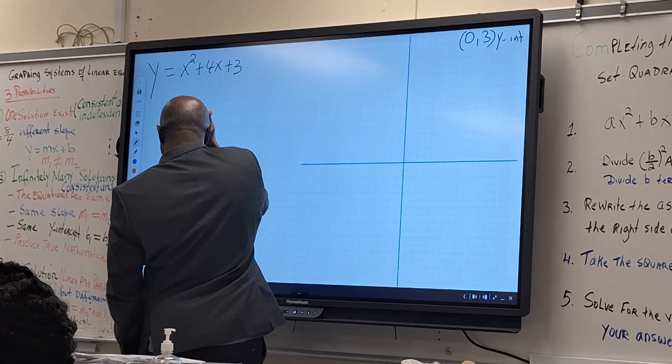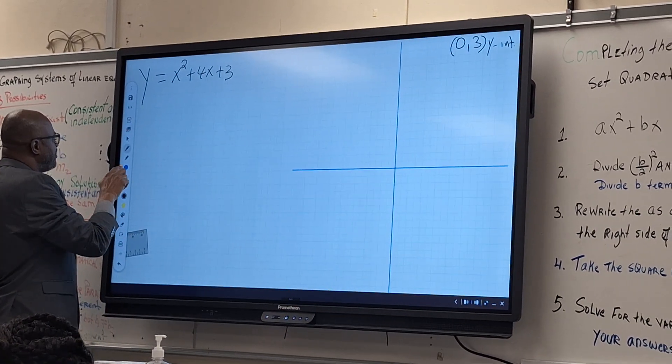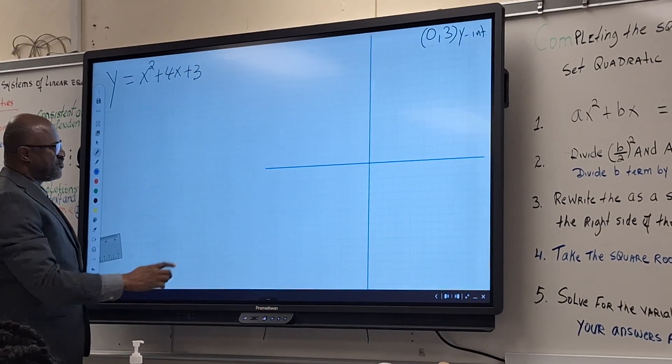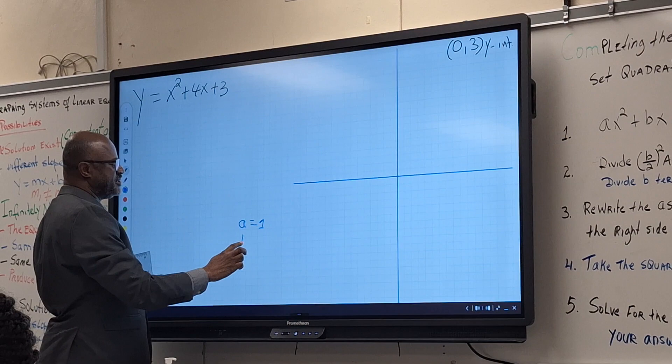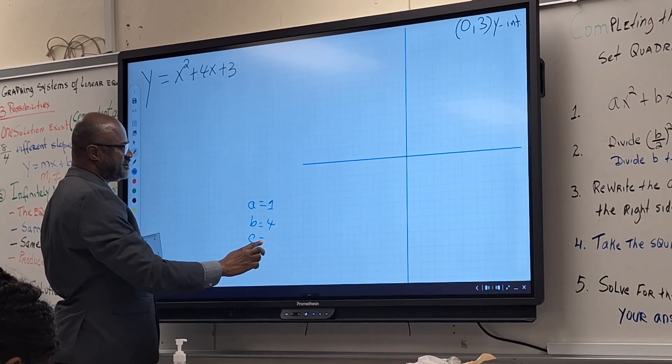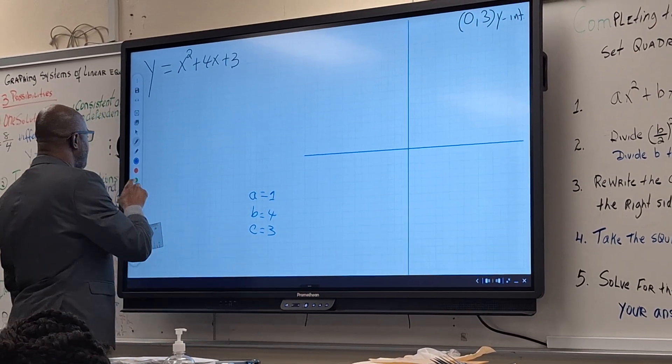Now we're going to go for the x-intercept. Is that equation in standard form? Yes. What is a? One. What is b? Four. And what is c? C is three. We're going to use quadratic formula.